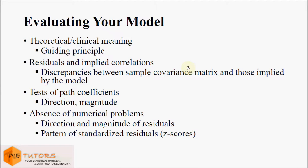Before we conclude this lecture, let us look at some important considerations when evaluating your model. First, we should use theory as a guiding principle while specifying and evaluating our model — this is particularly important when looking at modification indices and fit indices. Second, while evaluating the model it is important to look at residuals and implied correlations apart from the fit indices, to identify discrepancy between the sample covariance matrix and the implied covariance matrix. Third, while evaluating path coefficients we should look at the direction and magnitude, which should be consistent with theory and previous literature. Lastly, it is important to look for absence of numerical problems in the dataset and analysis results, including looking at the direction and magnitude of residuals and patterns of standardized residuals.